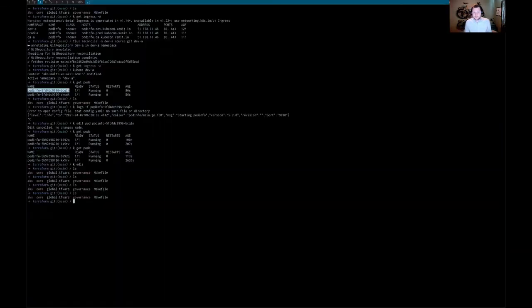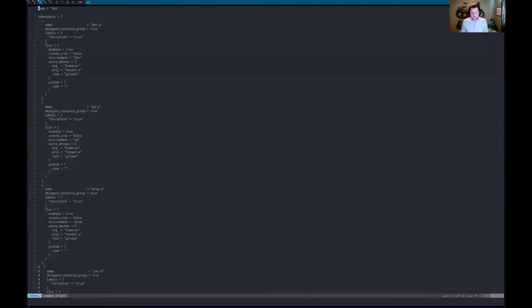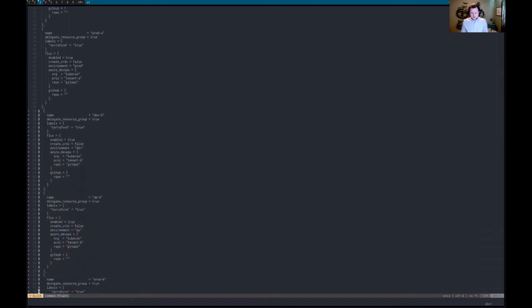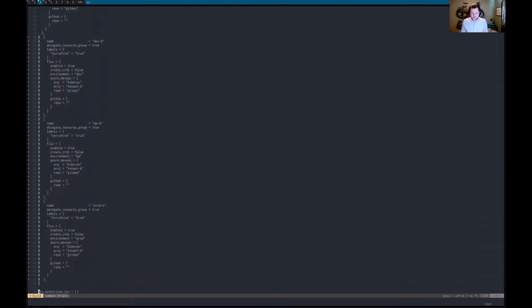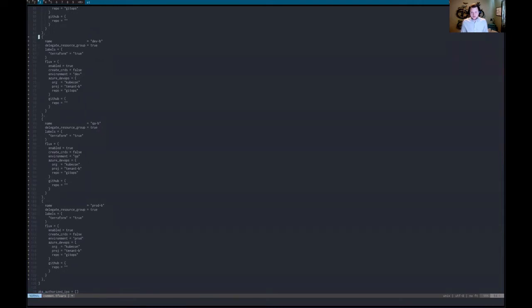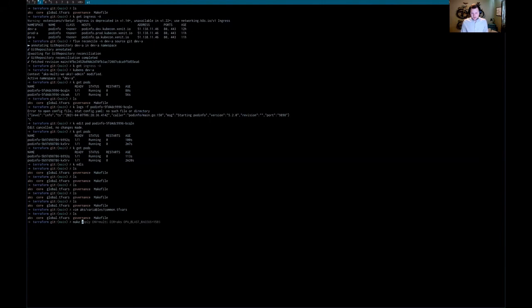We can quickly demo onboarding a new tenant by jumping into this Terraform here. This Terraform sets up a single AKS cluster that has three environments: a dev, a QA, and a production environment. If we call it out here, we're going to set up a new tenant called tenant B. We point out the Git repository that it's supposed to synchronize from, and we first run a plan.